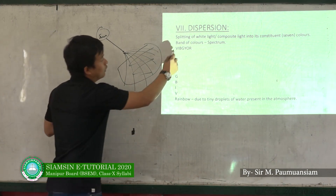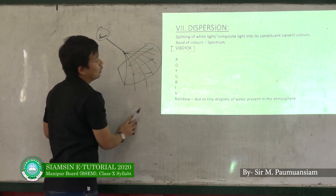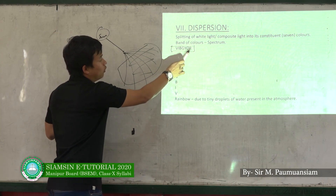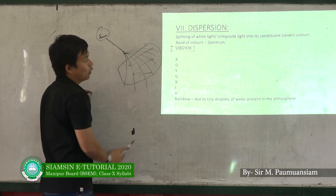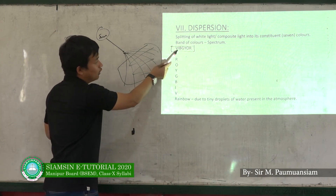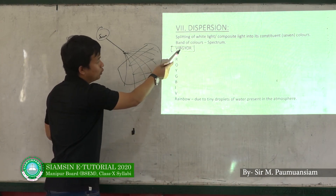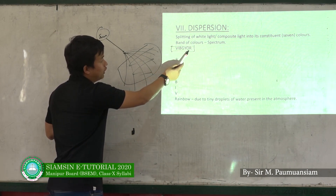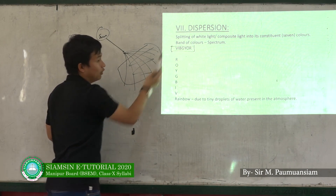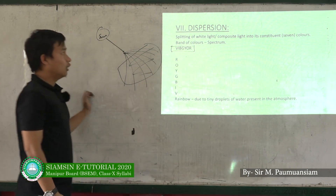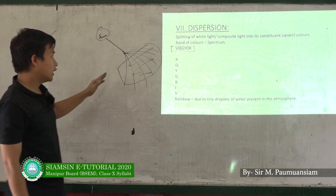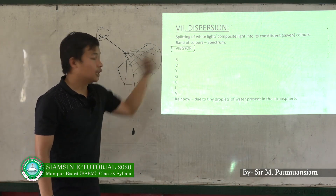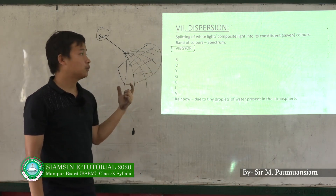The 7 colors of the spectrum are represented as VIBGYOR: V is Violet, I is Indigo, B is Blue, G is Green, Y is Yellow, O is Orange, R is Red. White light is split by dispersion to produce this spectrum.